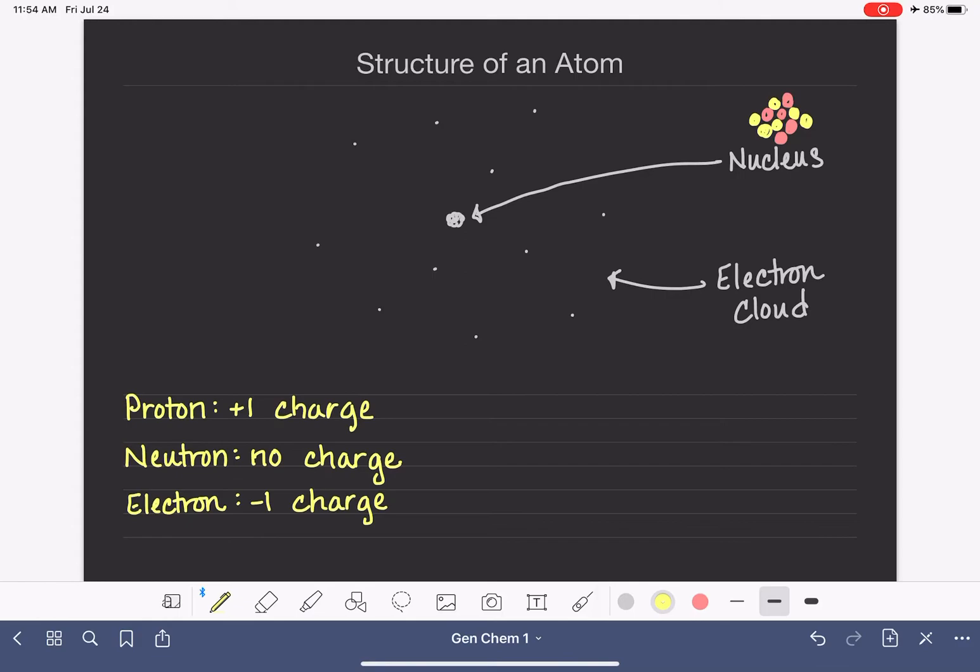Protons and neutrons are significantly heavier than electrons. The mass of an electron is about one two thousandth of the size of a proton or a neutron. So it takes two thousand electrons to add up to the mass of one single proton or one single neutron. And no atom has two thousand electrons.